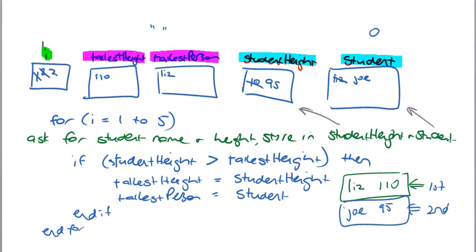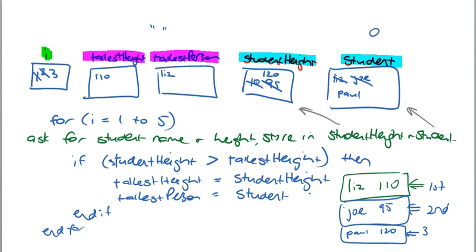Through for the third time, so this now becomes three. This person is Paul and he is 120 — he's going to be pretty tall. Coming through here, student name and height: the height for Paul is 120, so whatever is in there is replaced with 120, and whatever is in the name is replaced with Paul. Is the student height for Paul at 120 greater than what is currently in tallest height? Yes, it is. So then the tallest height is going to be replaced with the student height, and we can take whoever is in student and make them the tallest. So I'm going to change that — now it's Paul. I come through and drop out.